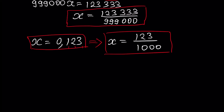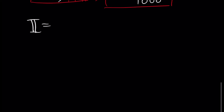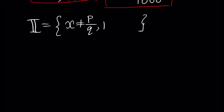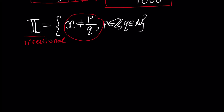We already know what a rational number is and how to calculate its rational form. Now let's talk about irrational numbers. The set of irrational numbers, denoted I, is the set of numbers x where x does not have a representation p over q, where p is an integer and q is a natural number. In other words, irrational numbers are numbers which are not rational.